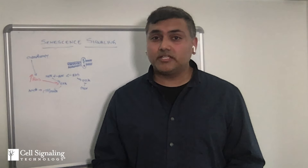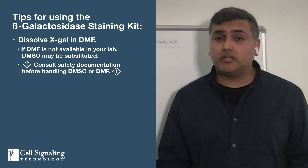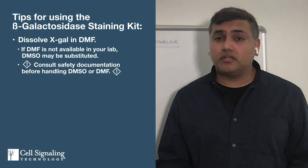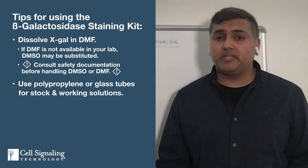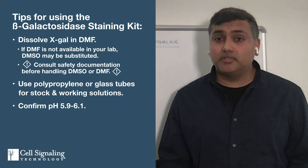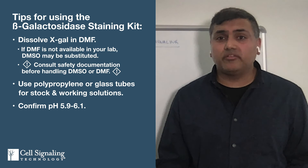Our scientists often receive tech support calls about blue X-gal crystals appearing in samples, making it hard to interpret results. To avoid this, dissolve X-gal in the solvent DMF to make your stock solution—use polypropylene or glass tubes, since polystyrene is not compatible with DMF. Check the pH of a diluted X-gal staining solution: if pH is too low, you'll get false positives; too high, false negatives. Confirm the pH is between 5.9 and 6.1 and adjust as necessary after adding X-gal. Finally, seal your plates with parafilm or a tight cover to prevent evaporation, which can contribute to crystal formation.